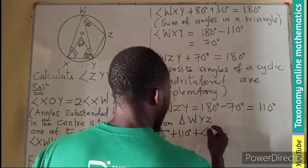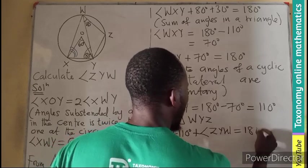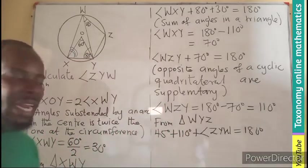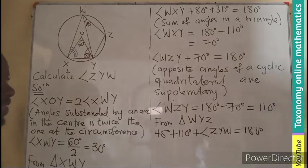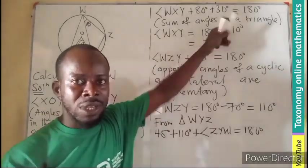It would be angle ZYW. All must give us 180, and I believe the property we are going to use is the sum of the interior angles of a triangle. It is already stated.